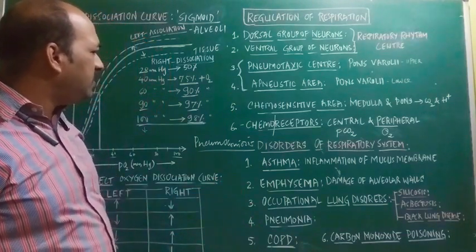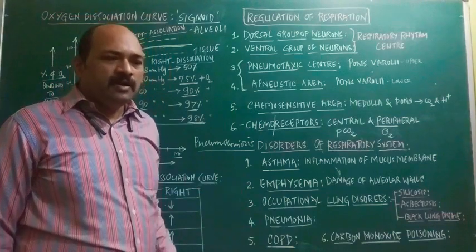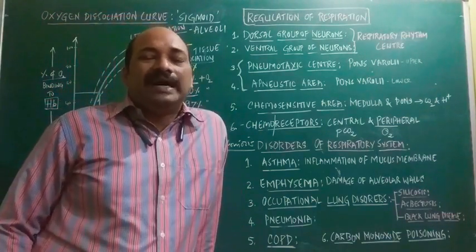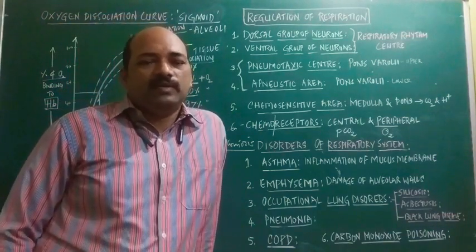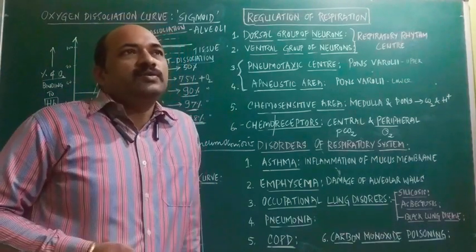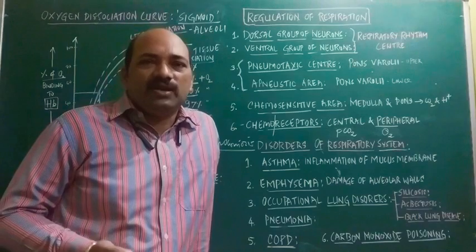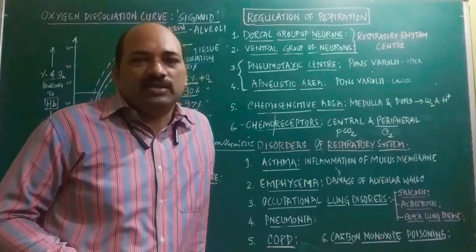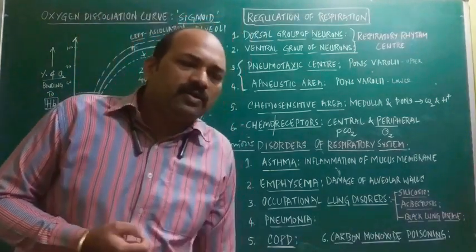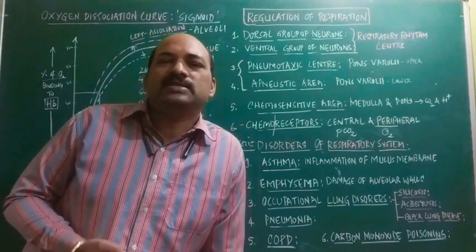The first one is asthma. Asthma is basically a disorder which occurs due to allergy. The chemical which causes allergy is called as allergen, and this allergen is involved in causing the respiratory disease called asthma.